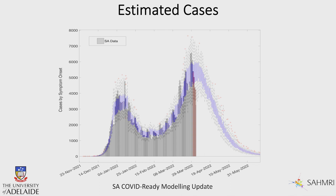We then put our own data and cases on top of that. Remember this is by the date of symptom onset, so you might be surprised that we appear to have had over 6,000 cases — not what we report in daily case numbers — but when you think about it in terms of symptom onset dates, you can see the mathematical model has actually predicted our cases very well.